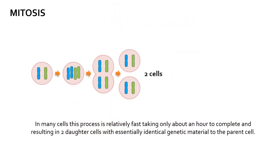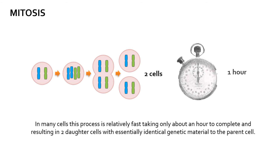The result of mitosis is the division of one parent cell into two daughter cells with essentially identical genetic material. The process is relatively fast, taking approximately one hour, and is probably one of the most complex operations in the life cycle of the somatic cell.